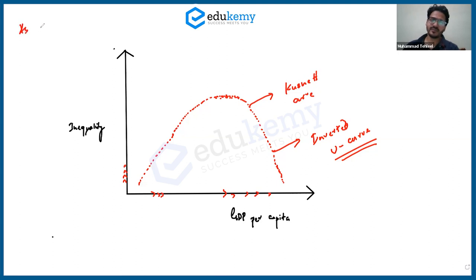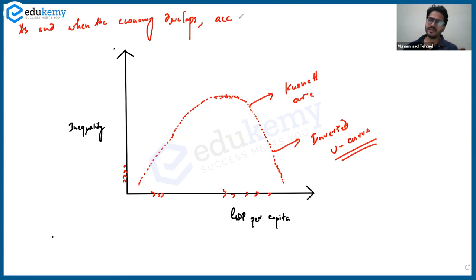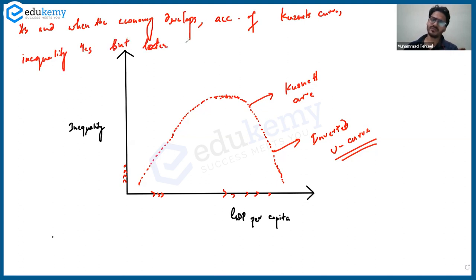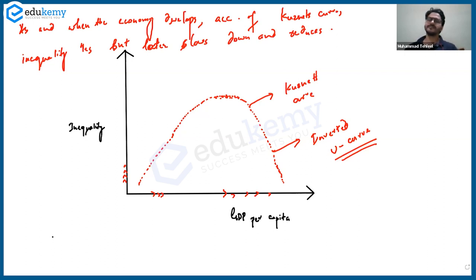So as and when the economy develops, according to the Kuznets Curve, inequality increases, but later slows down and reduces, creating an inverted U curve.